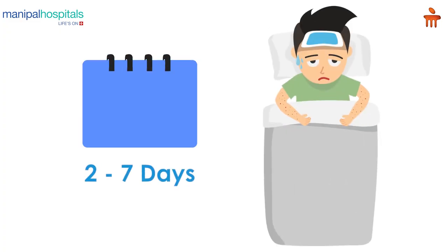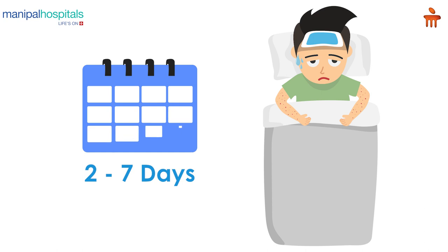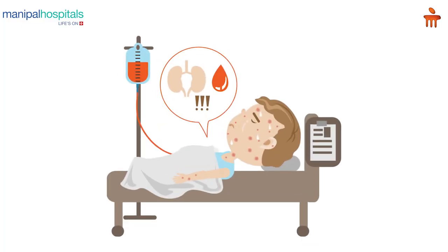The first is the acute febrile phase, which is followed by the critical phase, and then the convalescent and recovery phase. The acute febrile phase can last anywhere between 2 to 7 days. As the fever subsides, the critical phase sets in, which can last about 48 to 72 hours. This is where complications happen in dengue — platelets can fall, BP can go down, and multi-systemic involvement can occur. This is followed by the convalescent and recovery phase where patients can continue to have lingering symptoms like body ache and fatigue for a few days to a few weeks.